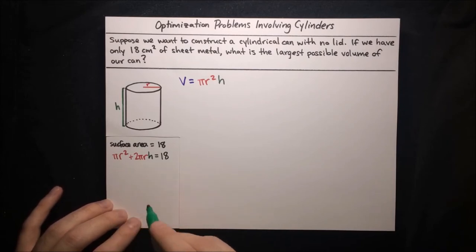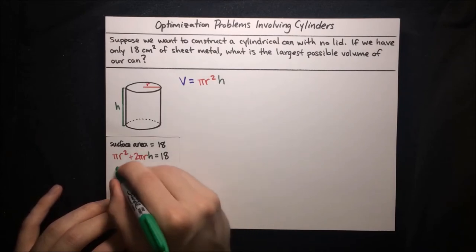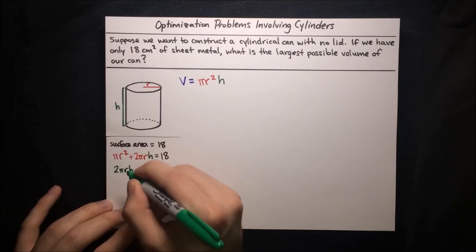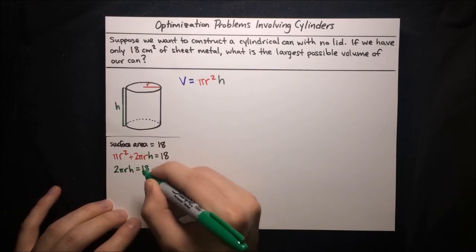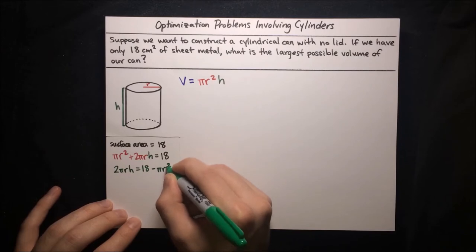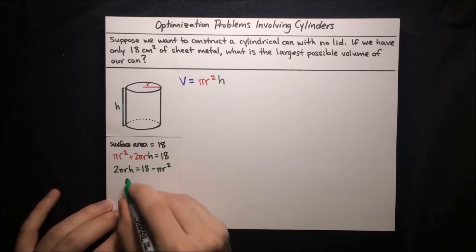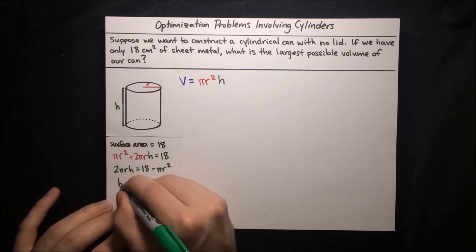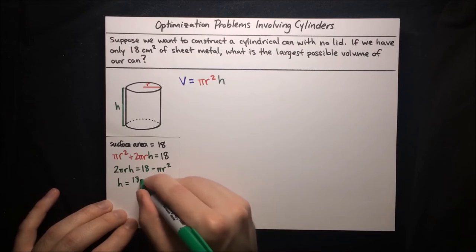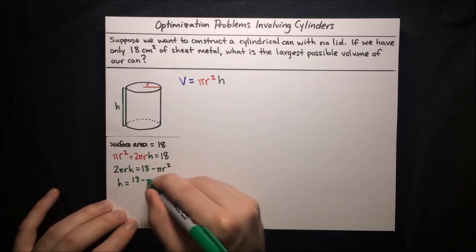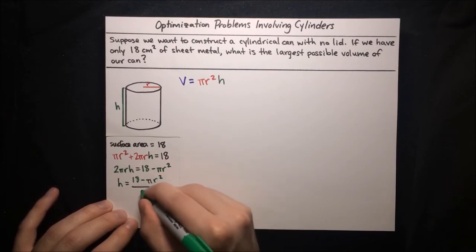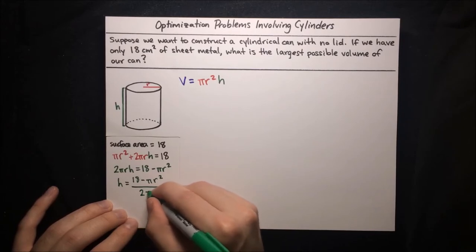Now let's solve for h in terms of r. Since h appears only once in the equation with no exponents, it'll be simple to solve. Subtract pi r squared: we get 2 pi r h equals 18 minus pi r squared, and then divide by 2 pi r. We get h equals 18 minus pi r squared, all over 2 pi r.